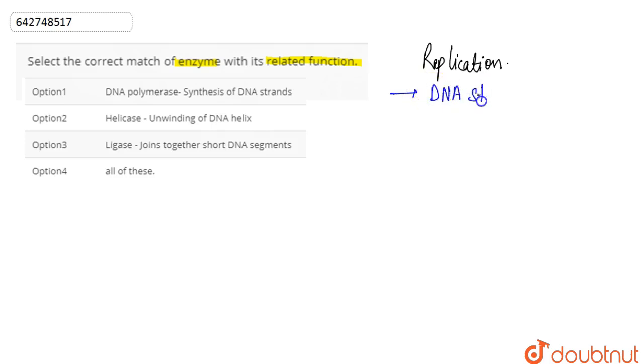DNA polymerase basically brings about the polymerization and hence the synthesis of the DNA strand. So during the process of replication, what happens is that we have these two strands of the DNA helix.